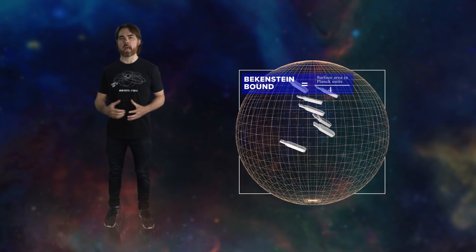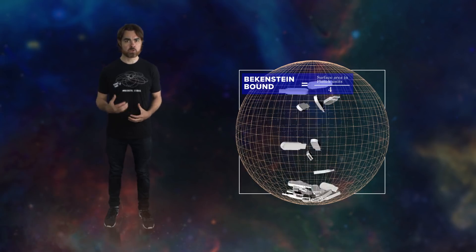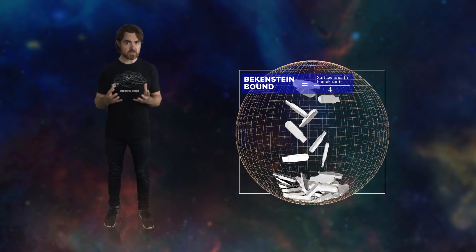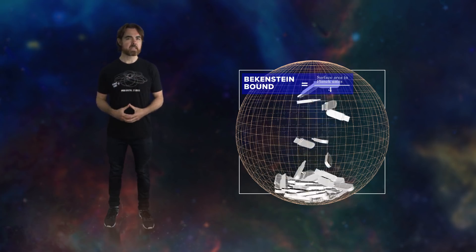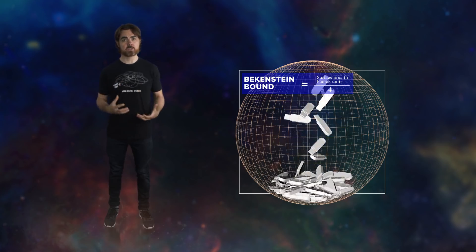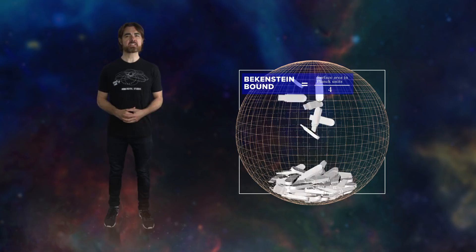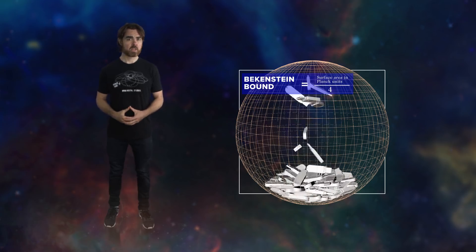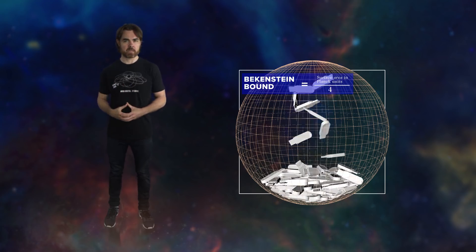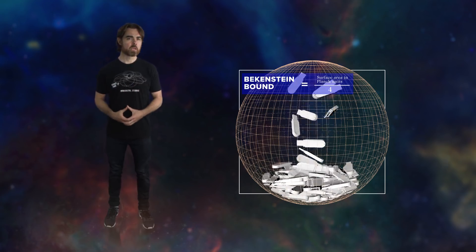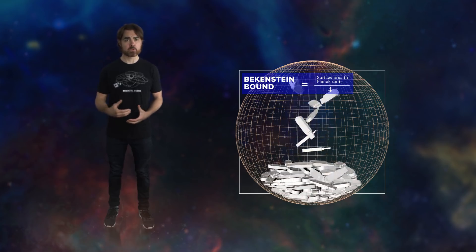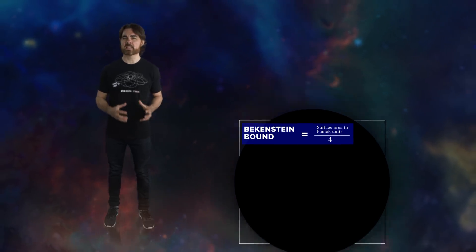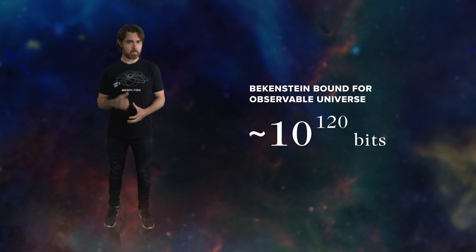It's defined by the Bekenstein bound, which tells us the maximum information that can be stored in a volume of space is proportional to the surface area of that volume. Specifically, it's the number of tiny Planck areas you can fit over that surface area divided by four. It was in studying black holes that Jacob Bekenstein realized that they must contain the maximum possible amount of hidden information, the maximum possible entropy. If you fill a region of the universe with information equal to its Bekenstein bound, it'll immediately become a black hole.